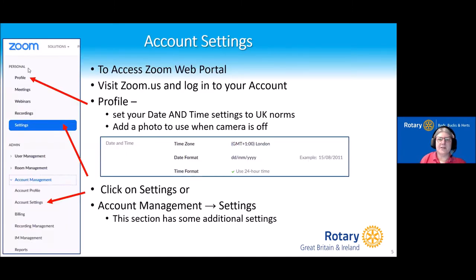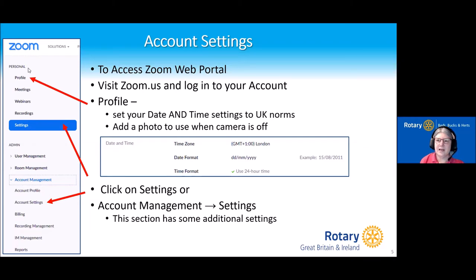To access your account settings, you have to go into Zoom via the web portal at zoom.us and log in. From there you can set up your own personal profile, which means you can add a photograph for when your camera is off. Also quite important when scheduling meetings is to set your date and time to the UK norms.